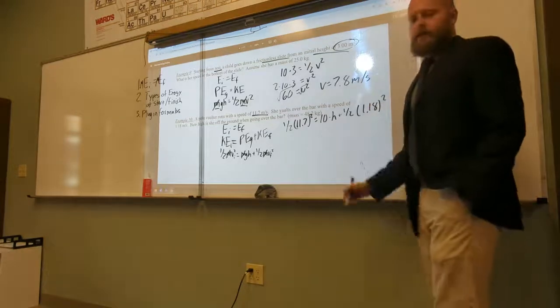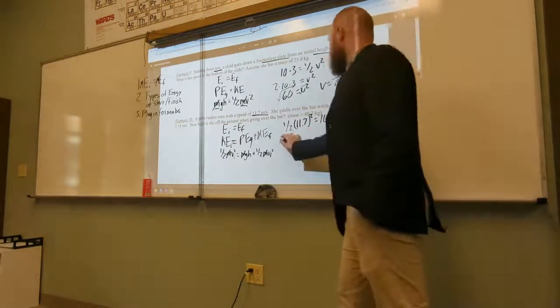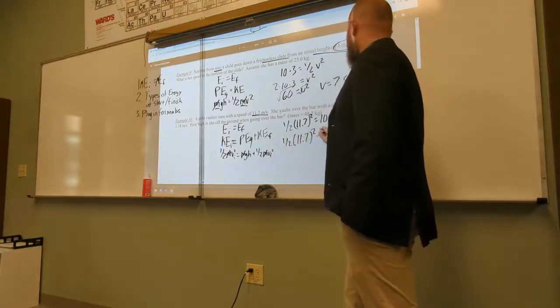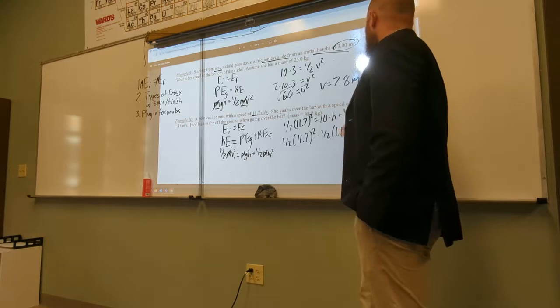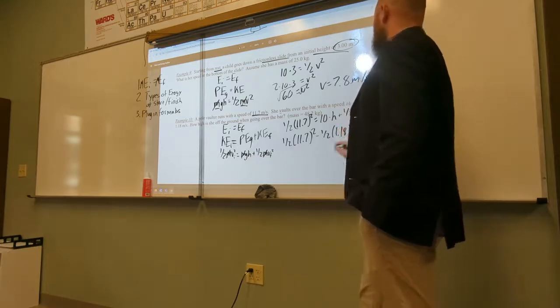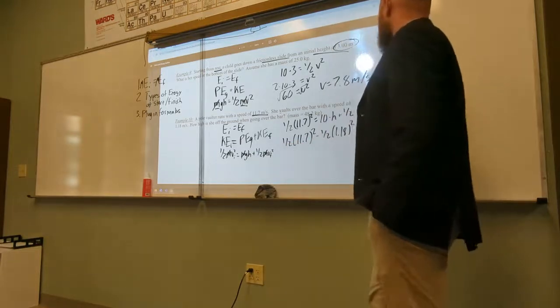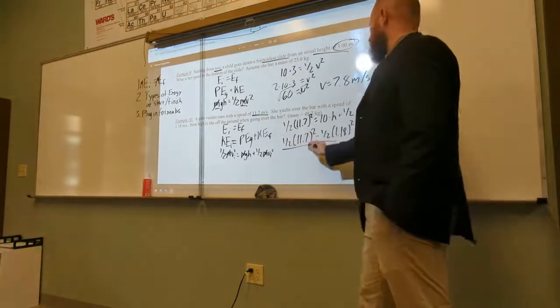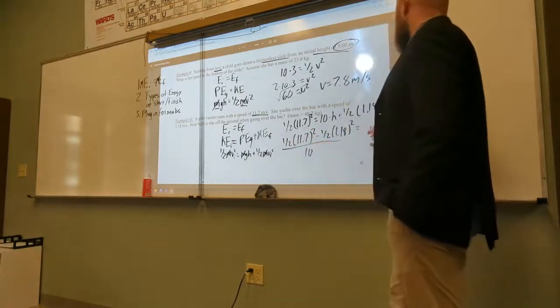I'm going to go ahead and move that to the other side. So, I have one-half, 11.7 squared, minus one-half, one-point-one-eight squared. And then, this equals 10h. So, I just need to divide this side by 10. So, h equals that. So, we go ahead and grab a calculator.